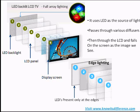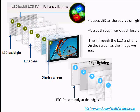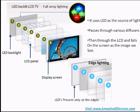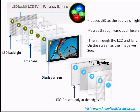With edge lighting, the series of diodes are arranged along the outside edges of the screen. When there is power, the light is distributed across the screen. Alternatively, in full-array lighting, there are several rows of diodes behind the entire surface of the screen.